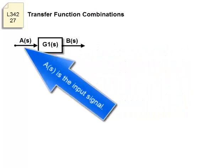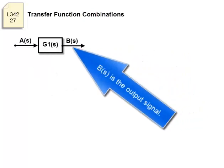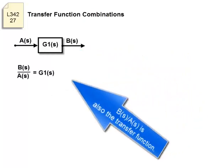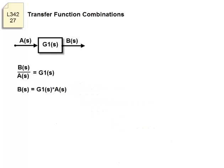A is the input signal. B is the output signal. B divided by A is also the transfer function. B is G1 multiplied by A. B is A multiplied by G1.